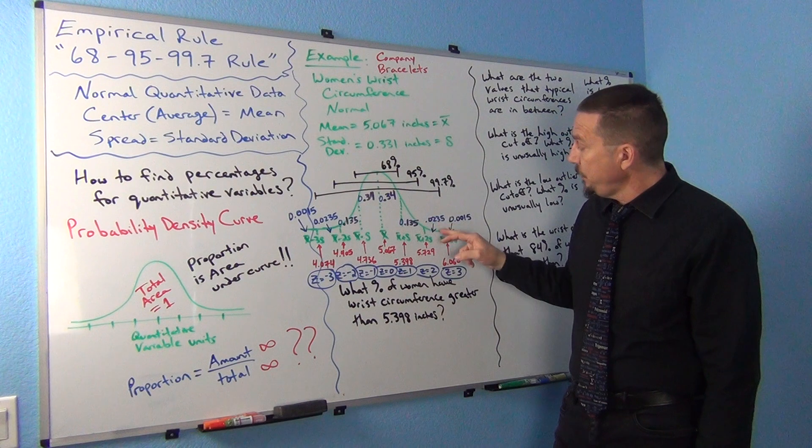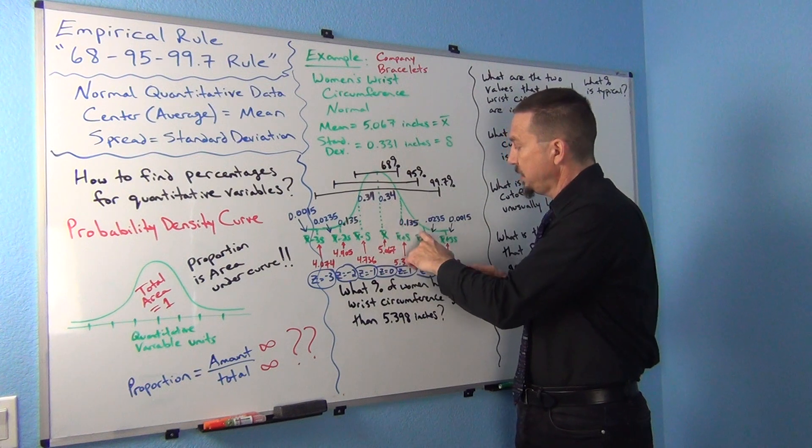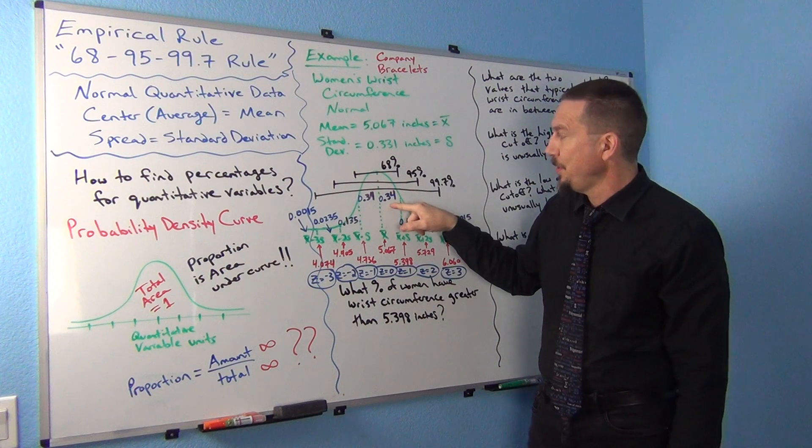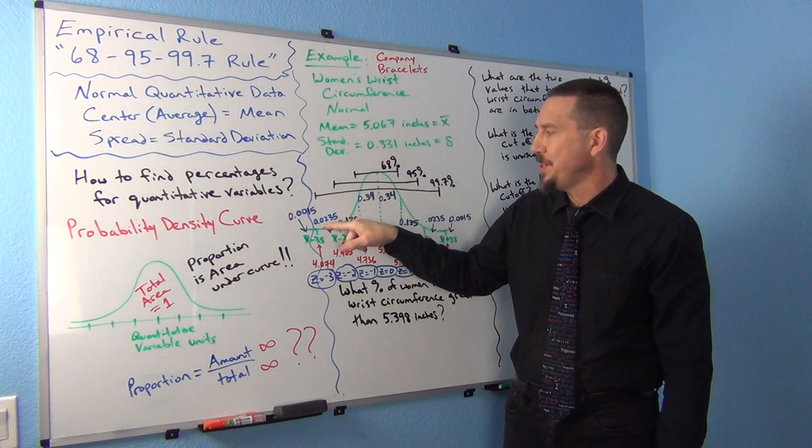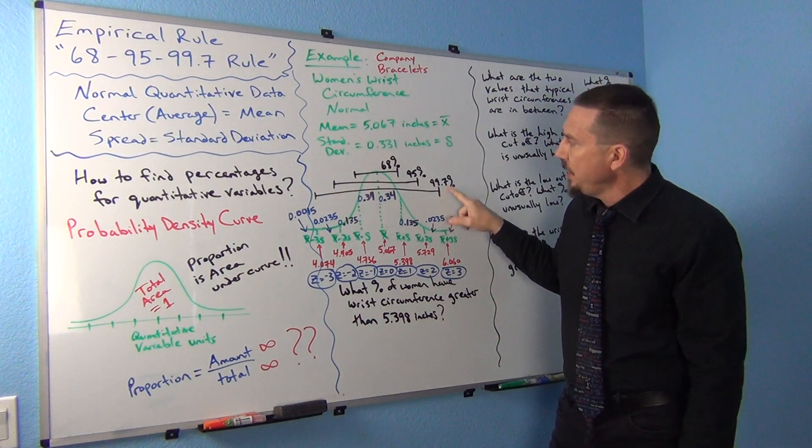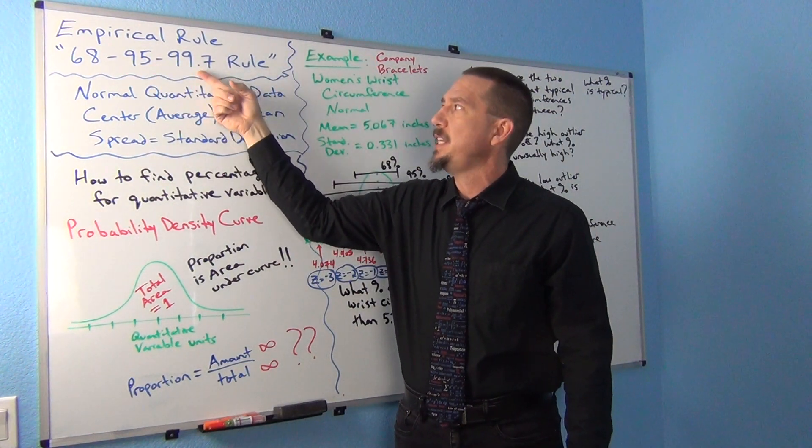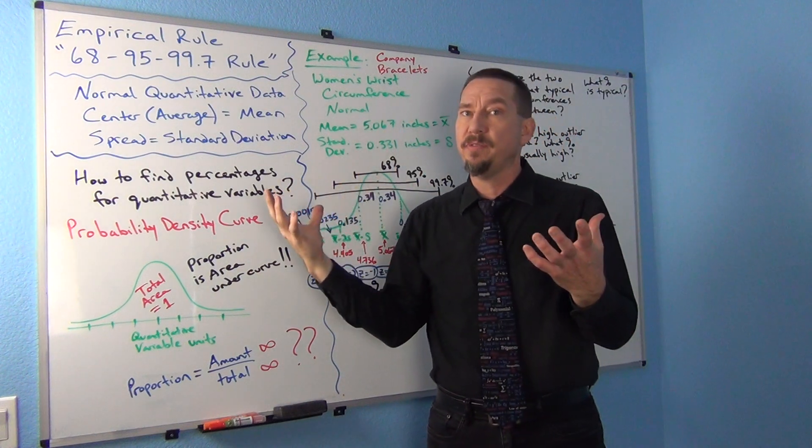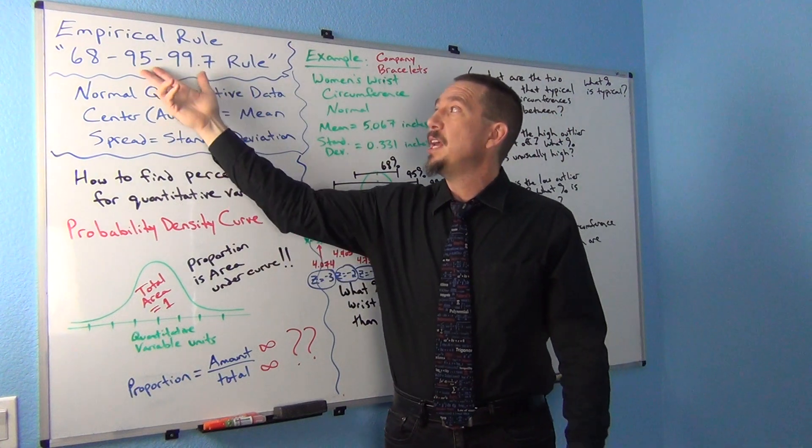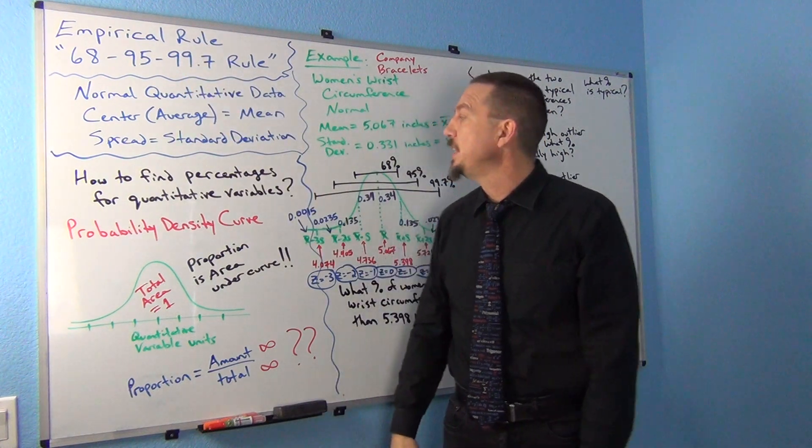So then, if you go here, if I go three standard deviations away, now that would be six sections, sort of the middle six sections. So if I add up 0.0235, plus 0.135, plus 0.34, plus 0.34, plus 0.135, plus 0.0235, it adds up to about 99.7% or 0.997. And this is where the empirical rule sometimes gets its name 68, 95, 99.7 rule. One standard deviation from the mean, this is about 68%. Two standard deviations from the mean, 95%. Three standard deviations from the mean, 99.7%. That's kind of where it got that name.